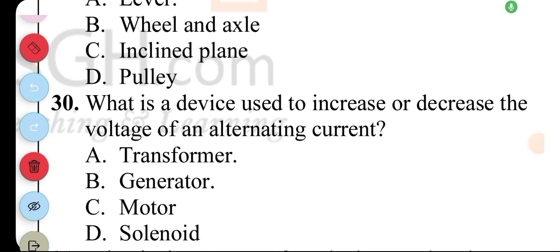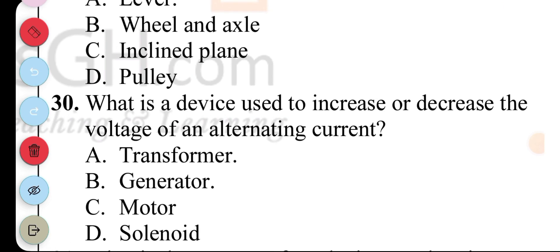Question 30. What is the device used to increase or decrease the voltage of an alternating current? A. Transformer, B. Generator, C. Motor, D. Solenoid. The answer to question 30 is A. Transformer.